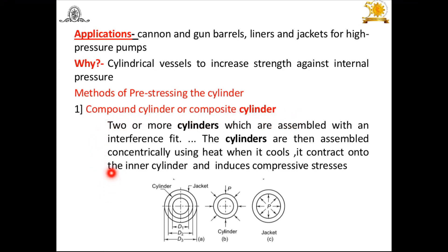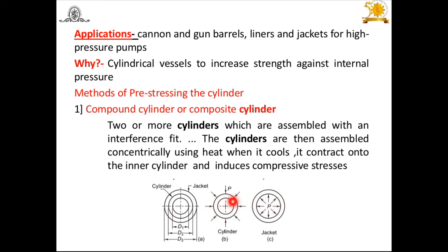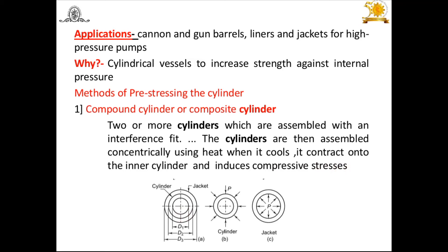In a compound cylinder, two or more cylinders are assembled with an interference fit. The inner part is the cylinder and the outer part is the jacket. The cylinders are assembled concentrically using heat — when heated, there is expansion, and when it cools, it contracts (shrinkage). Because of this shrinkage, the jacket contracts onto the inner cylinder and induces compressive stresses. That is the pre-stressing effect of a compound cylinder.